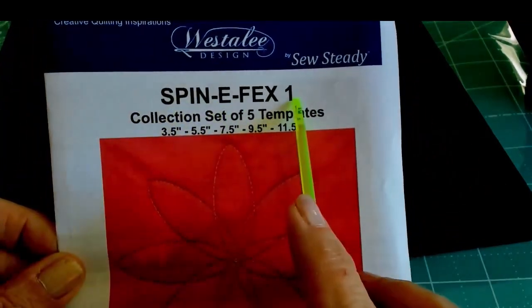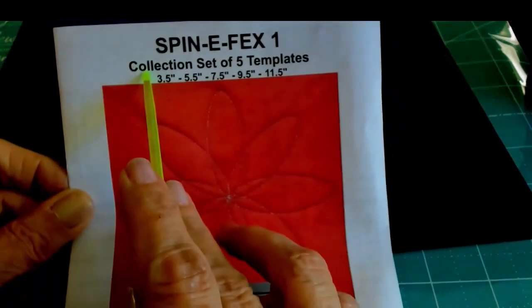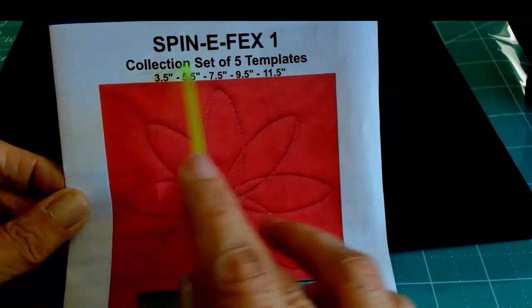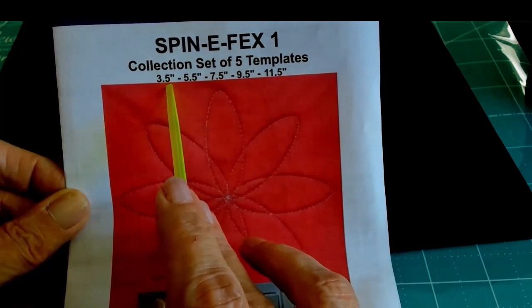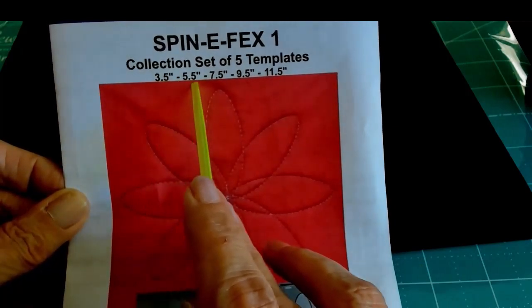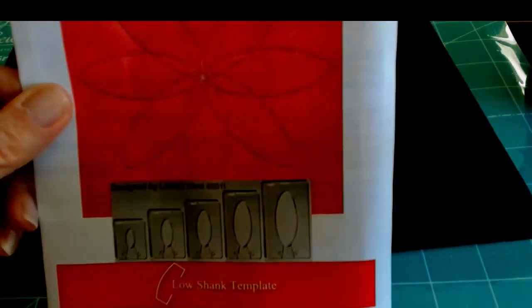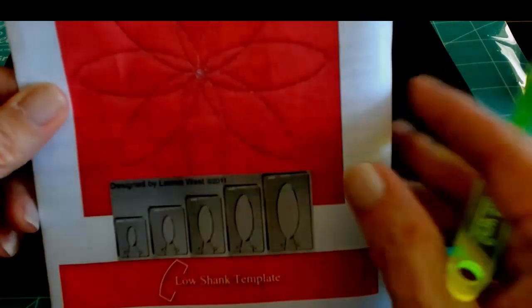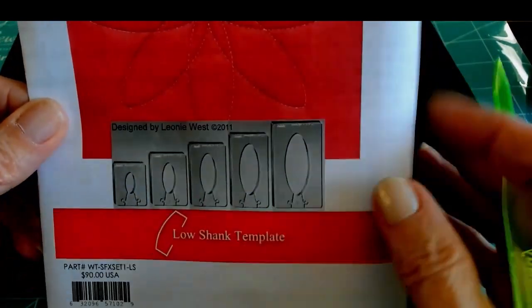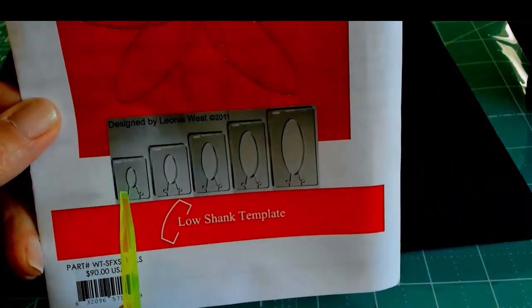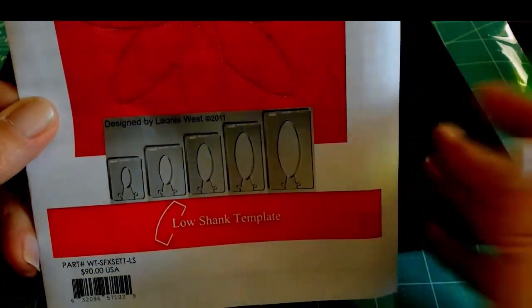The name of the template, spin effects one. This particular set has five templates. As I already showed you, three and a half, five and a half, seven and a half, nine and a half, eleven and a half. Here is a simple eight point design motif stitched out. And here are pictures of them.